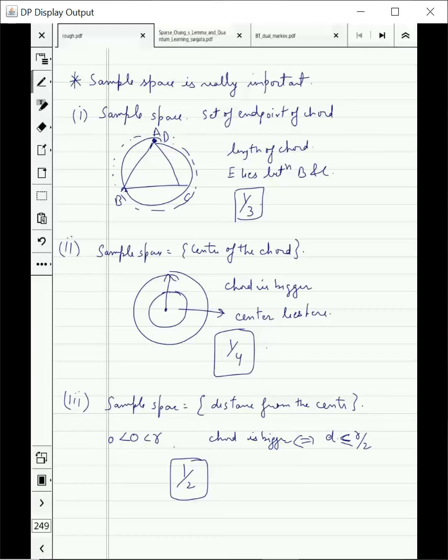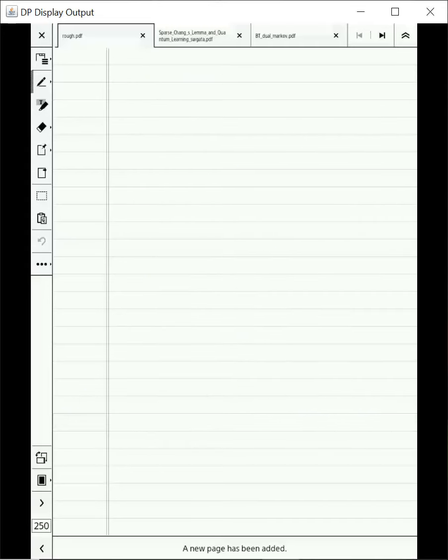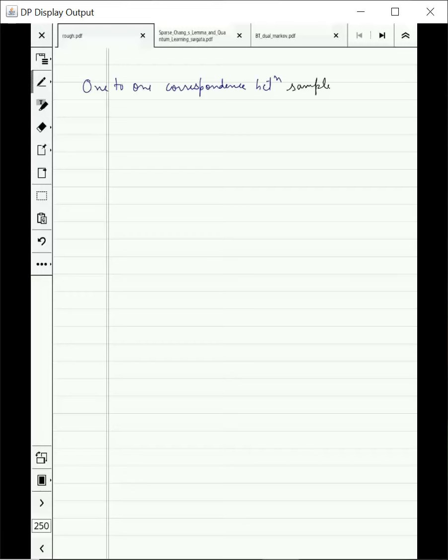You might have a question, isn't there one-to-one correspondence between all these sample spaces? There were three sample spaces. One was the sample space of the endpoint, one was the center of the chord, and one was the distance of the chord. You can see that there is one-to-one correspondence. Shouldn't we get the same answer? No, that is not correct. You can see it by a simple example.